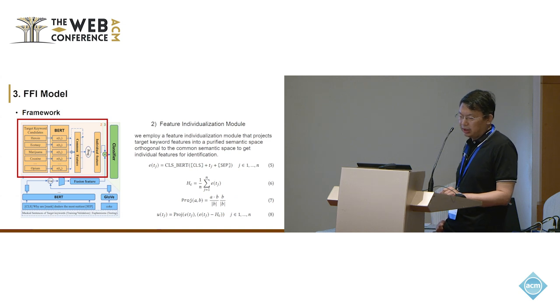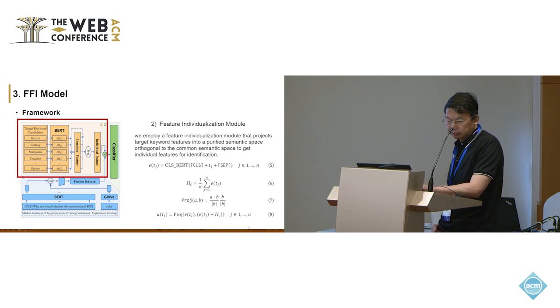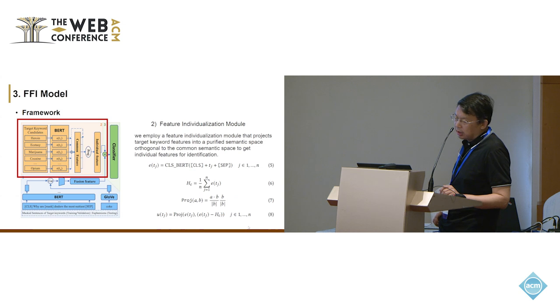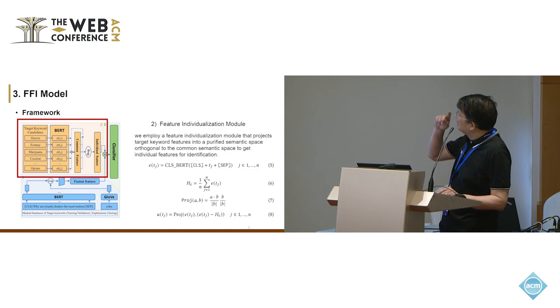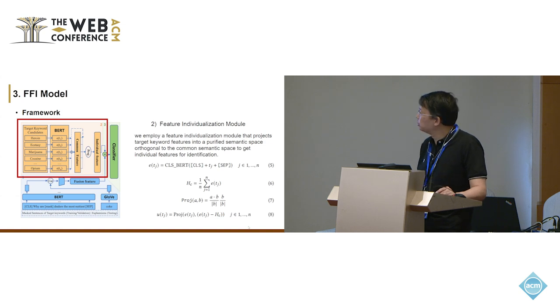This part is about feature individualization. We want to project the target keywords into different semantic spaces, making it easy to distinguish the target keywords with similar semantics. We believe that the target keyword can project into a common semantics space and the individual semantics space. So we use BERT to get the embedding of the sentence. And we use the average of the encoding and embedding to get the common space. And then we use projection to get the individual semantic space.